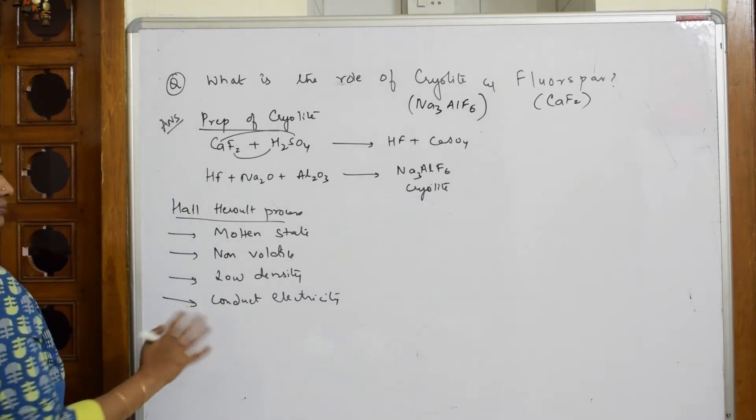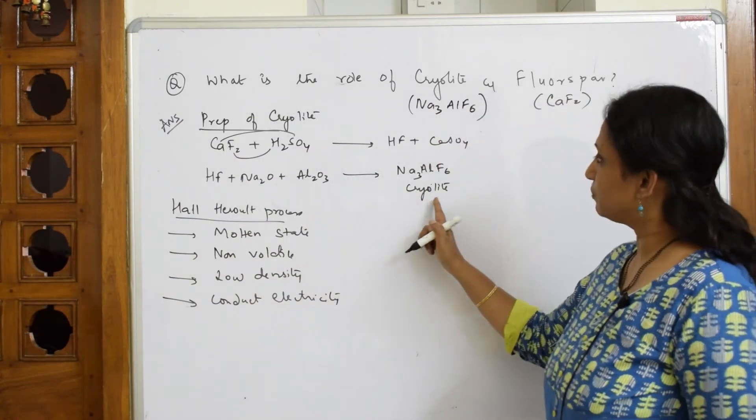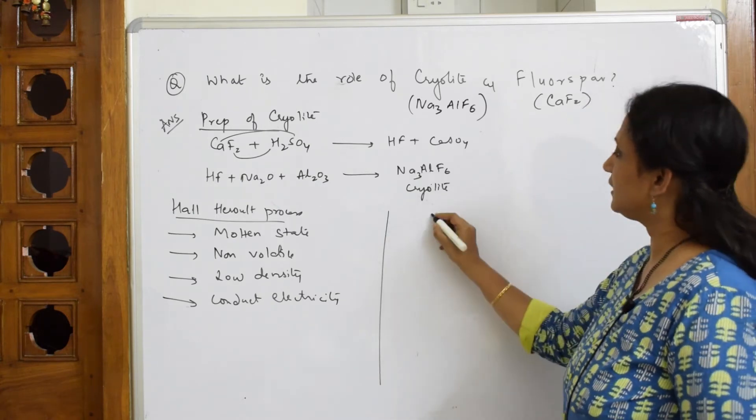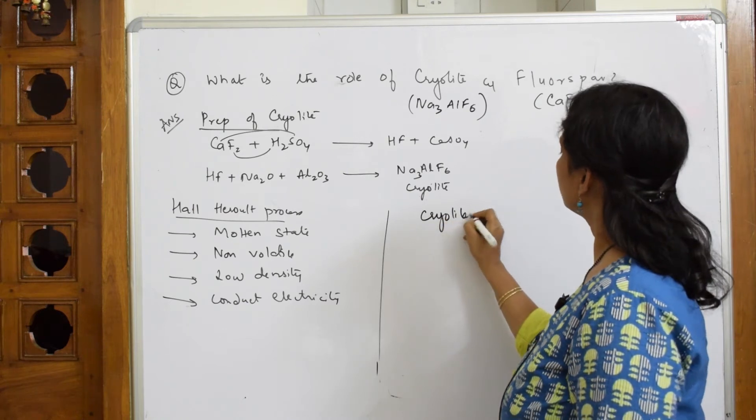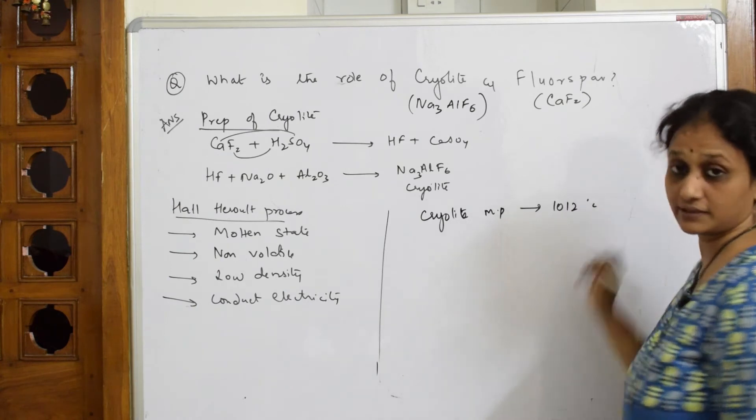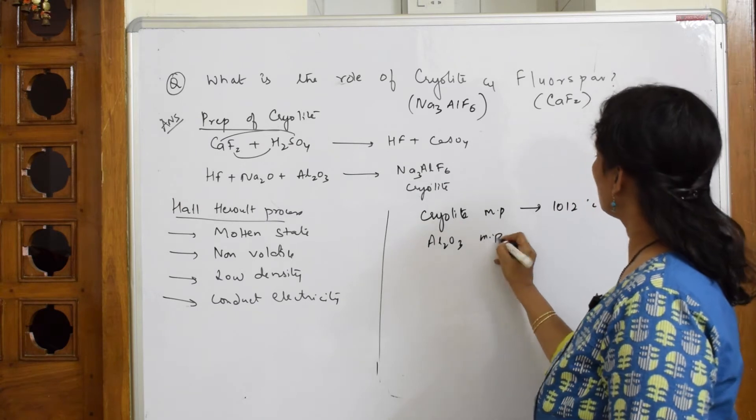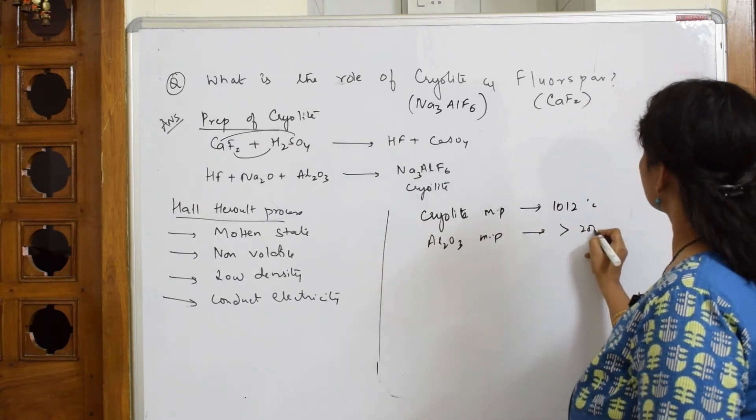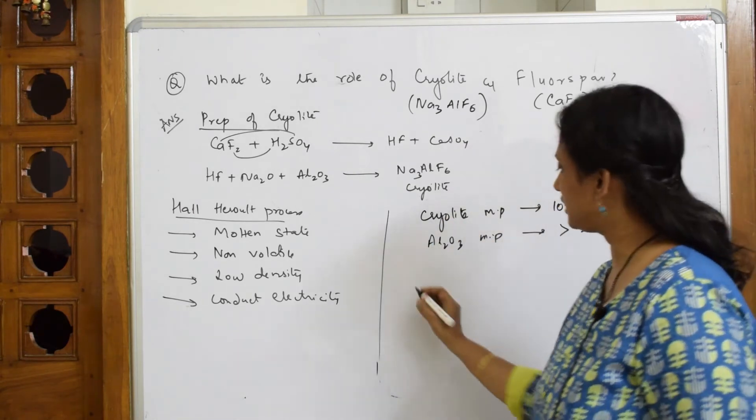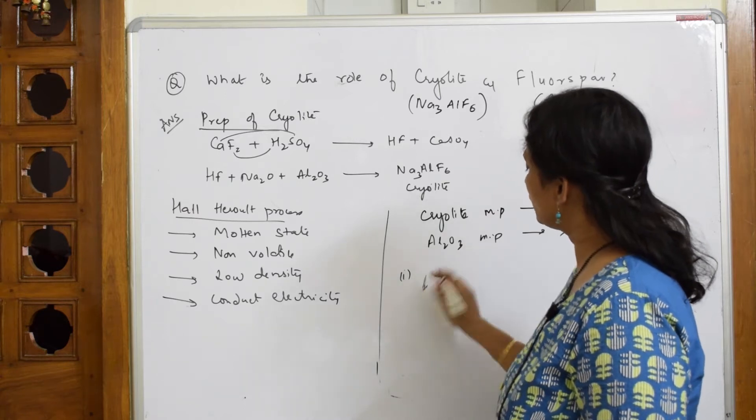If all these conditions are satisfied, then only you are going to pick up that particular electrolyte. And when we see all these conditions, the important compound which was found useful was cryolite. Why cryolite? Basically, your cryolite melting point is 1012 degree centigrade. And if I speak about aluminium, melting point is almost above 2000.